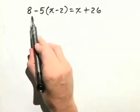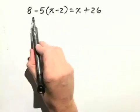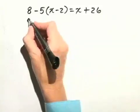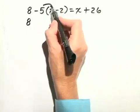So we actually need to distribute the negative 5 through the parentheses. Now don't be tempted to subtract 5 from 8, because that would not follow our order of operations. So let's leave the 8 alone. We have 8. Now let's distribute the negative 5 through the parentheses.